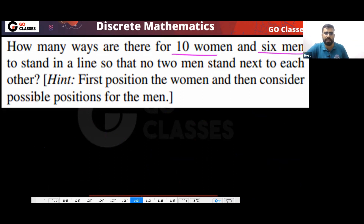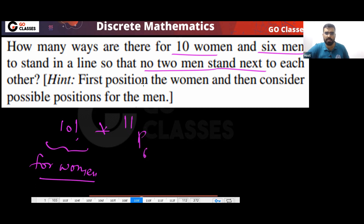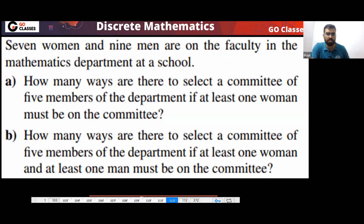How many ways are there so that two women and six men stand in a line with no two men next to each other? First arrange the ten women — there are ten factorial ways. There are eleven gaps. In those eleven gaps you can permute the six men.